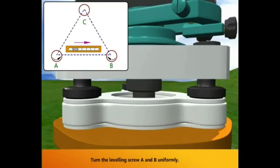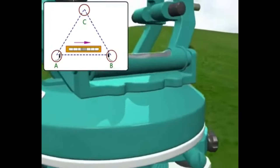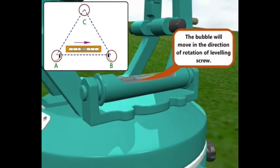Turn the leveling screws A and B uniformly. The bubble will move in the direction of rotation of leveling screw.